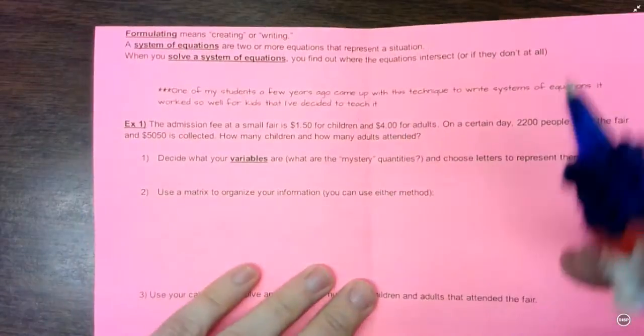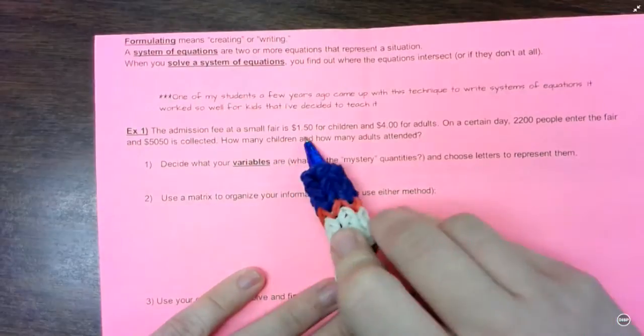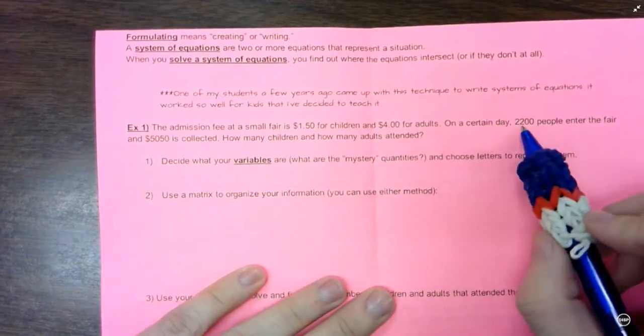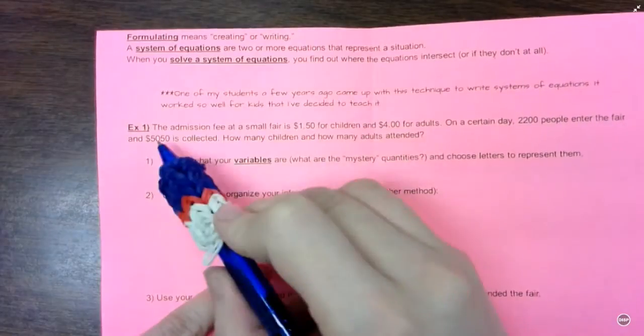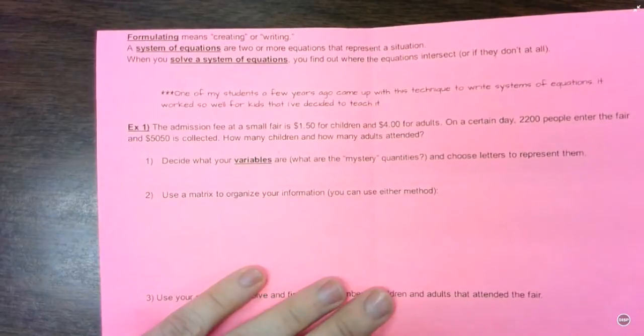We're going to jump right into an example. The admission fee at a small fair is $1.50 for children and $4 for adults. On a certain day, 2,200 people enter the fair and $5,050 is collected. How many children and how many adults attended?